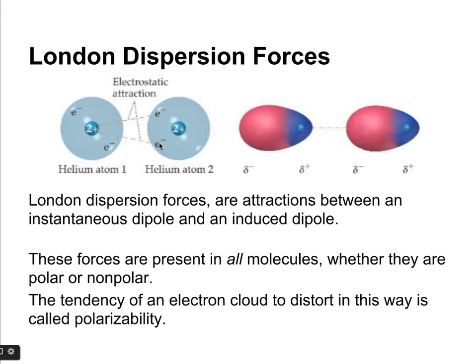The electrons on helium atom 2 would push the electrons on helium atom 1 over to the left side, creating an instantaneous unequal electron distribution so that the left side would be slightly negative and the right side slightly positive. All molecules have these forces, whether they're polar or nonpolar — you just have to have electrons to have London dispersion forces. The tendency of an electron cloud to distort like this is called its polarizability, and the strength of London dispersion forces increases with the polarizability of an atom or molecule.